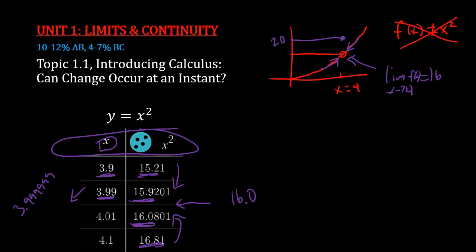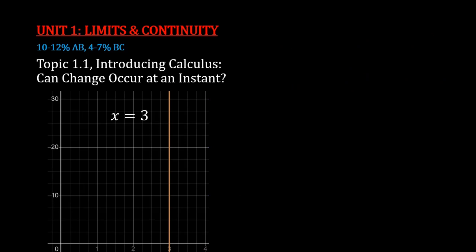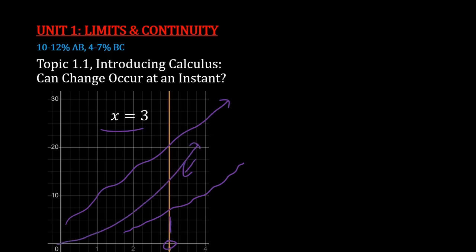One important thing to understand: can change occur at an instant? At X equals 4, the function is not defined to be 16, but the limit as we get infinitely closer is 16. Now the College Board also wants you to know about a vertical line like X equals 3, where the independent variable has no change at all. There is no instantaneous change here because the function is not being manipulated — it's only defined at one point. If we tried X equals 2.999, the function is not even defined there, and there's no instantaneous change.